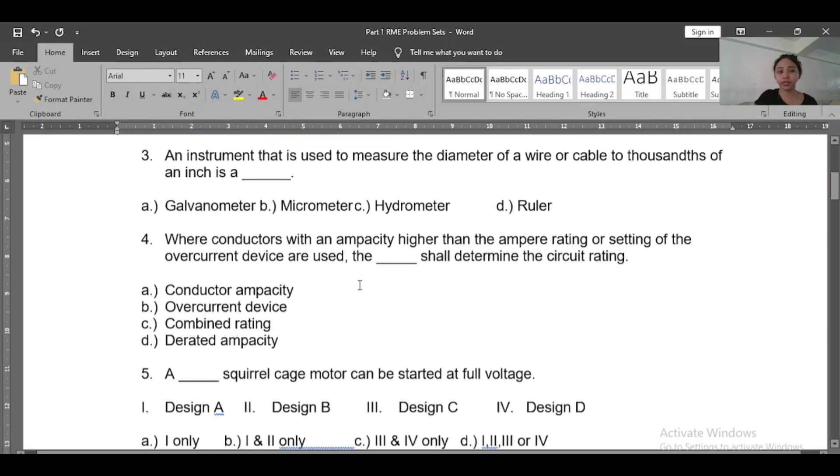And then number three: An instrument that is used to measure the diameter of a wire or cable to a thousandth of an inch is a blank. A) Galvanometer, B) Micrometer, C) Hydrometer, D) Ruler. So what's the answer? The answer is B, a micrometer.